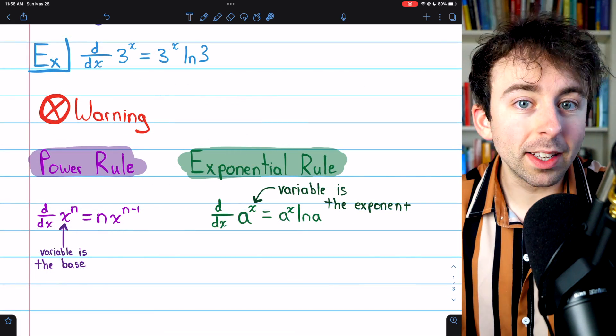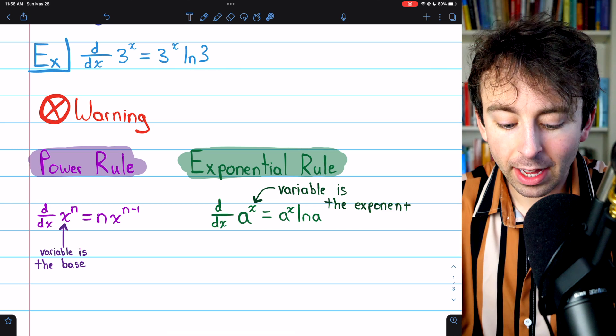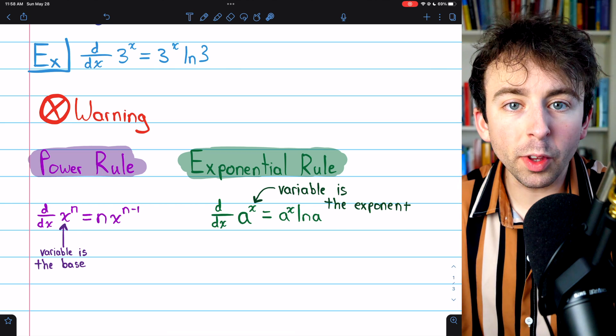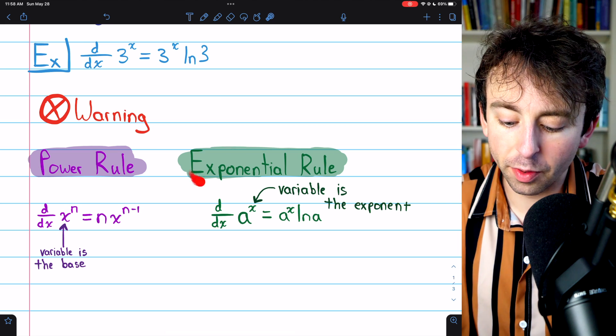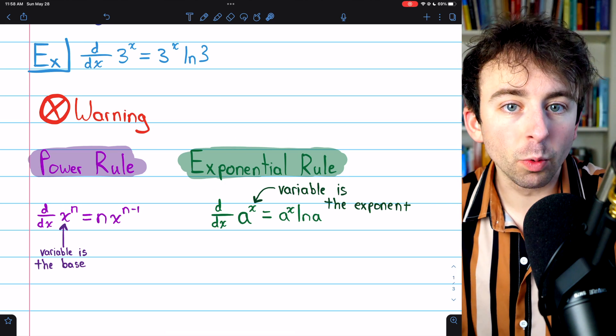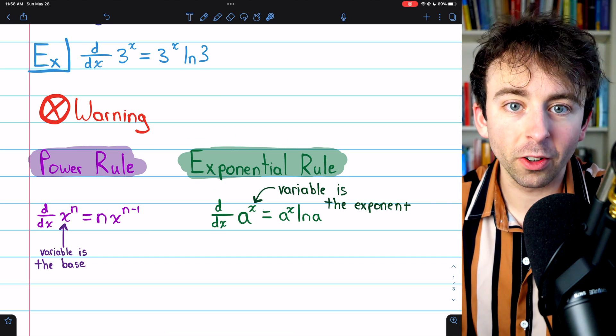Let's just finish with a warning because this is a common mistake people make, which is to get the power rule confused for the rule that we just proved. You might call the rule we just proved the exponential rule as it's a derivative rule for exponential functions.